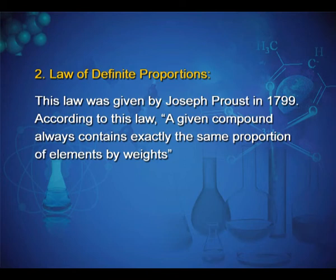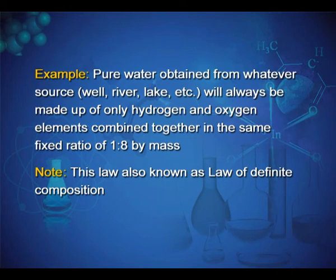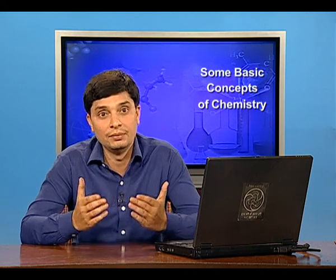Second law: law of definite proportion. This law was given by Joseph Proust in 1799. According to this law, a given compound always contains exactly the same proportion of elements by weight. Example: pure water obtained from whatever source, well, river, lake, etc., will always be made up of only hydrogen and oxygen elements combined together in the same fixed ratio of 1:8 by mass. Note: this law is also known as the law of definite composition.